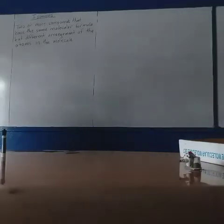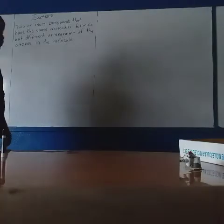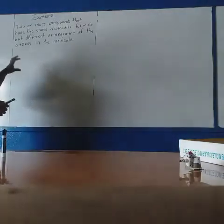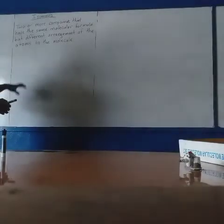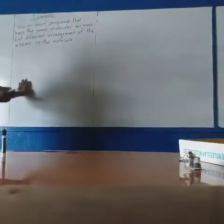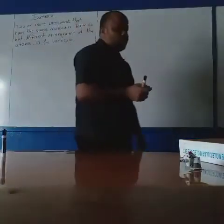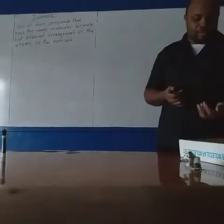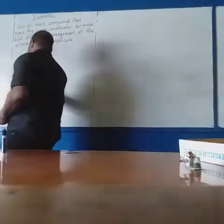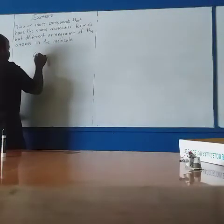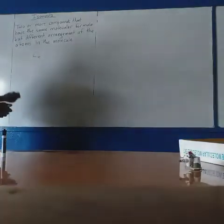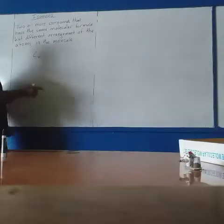Continuing from our video on alkanes part 2, we will be looking at isomers. We have already looked at alkanes and how to name them, so now we are going to look at the phenomenon known as isomerism. An isomer is one of two or more compounds with the same molecular formula, but the arrangement of the atoms in the compound is different.